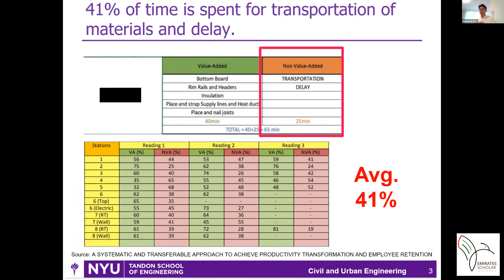Even though modular construction has such advantages, there is still a bottleneck to maximizing productivity. According to a case study from the University of Tennessee on a modular construction company, delays are caused by transportation of materials and also during transitioning to the next step of the assembly process. These delays take an average of 40% of the time spent on each task.